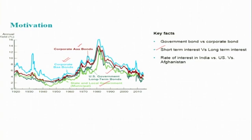Some other things you might observe: the rate of interest across the globe, that means between countries — for example, when you compare the rate of interest between India and US, you can see that the rate of interest for government bonds is much lower in the US compared to India. Similarly, the rate of interest in Afghanistan, even issued by the Afghanistan government, is greater than India's. So there are differences in the rate of interest for different debt instruments. What explains the reason for these differences?